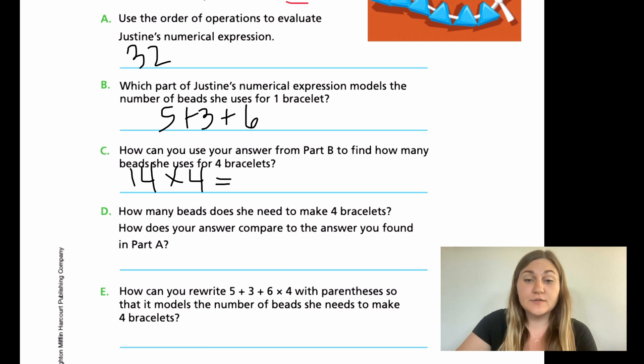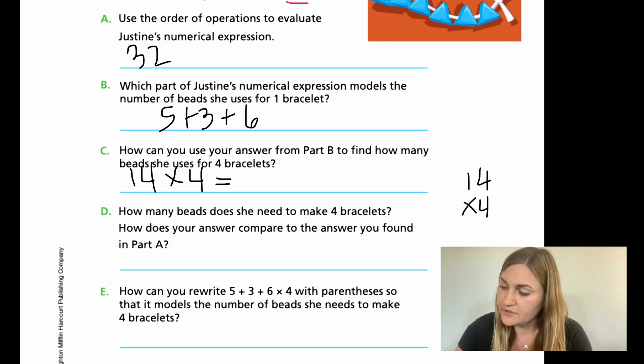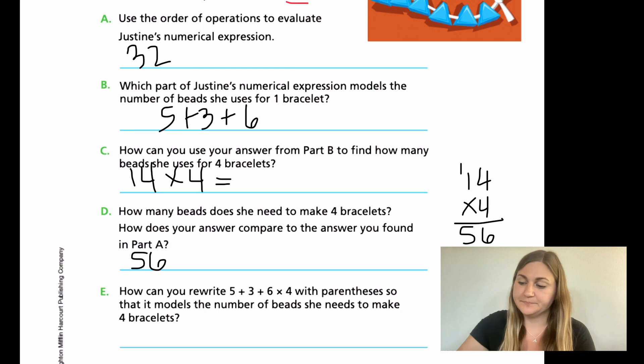We're going to move down to D. It says how many beads does she need to make four bracelets? So the 14 times 4, if we did 4 times 4, I'm going to go ahead and show my work over here. 4 times 4 is 16, carry the 1. 4 times 1 is 4, plus 1 is 5. So she would need 56 beads to make her four bracelets. The second part of this question says, how does your answer compare to the answer you found in part A? When you did it in part A, it was only 32 beads. But now that we went through the problem a little bit differently, we found out it's 56 beads. The answer we found is more, it's higher than the original.